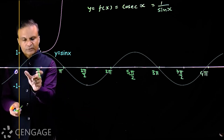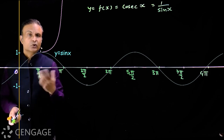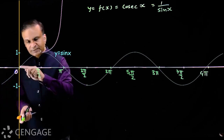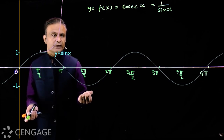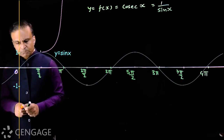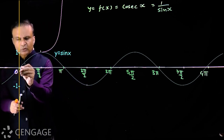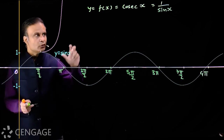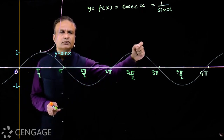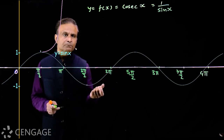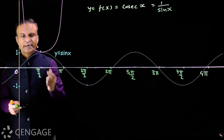Now consider the first quadrant — x in 0 to π/2. Here sin x increases from 0 to 1, which means cosec x will decrease. We cannot take x = 0 because sin 0 = 0 and 1/0 is not defined. However, when x is very close to 0 but slightly more than 0, sin x approaches 0, so cosec x approaches infinity. This gives us the graph of cosec x in the interval 0 to π/2.